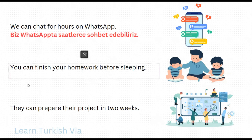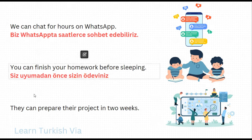In the next sentence, it says 'you can finish your homework before sleeping.' Let's use you plural – siz. Before sleeping – sleep is uyu, uyumadan önce. Your homework – sizin ödeviniz, which is particular so we need the accusative suffix: sizin ödevinizi. Finish – bitir, can finish – bitirebil, simple present tense – bitirebilir, you can finish – bitirebilirsiniz. So: 'Siz uyumadan önce sizin ödevinizi bitirebilirsiniz.'